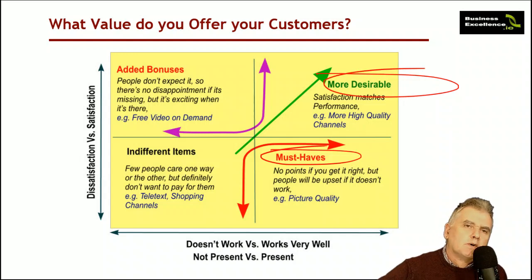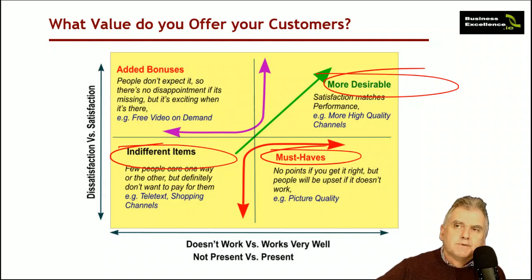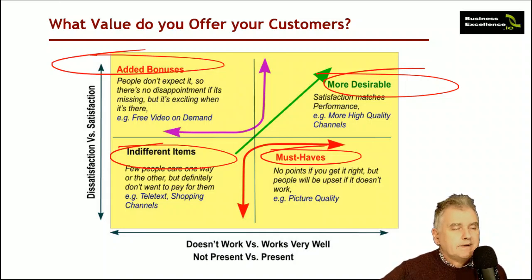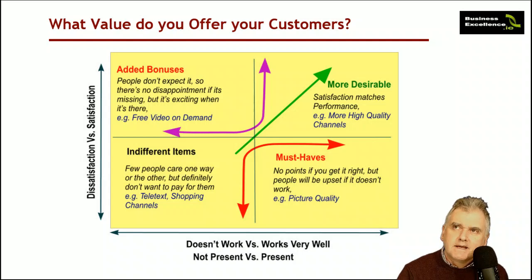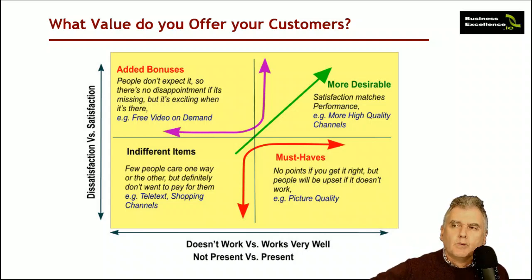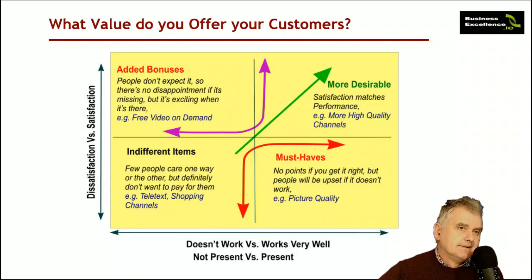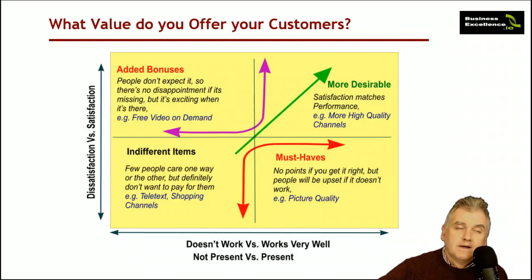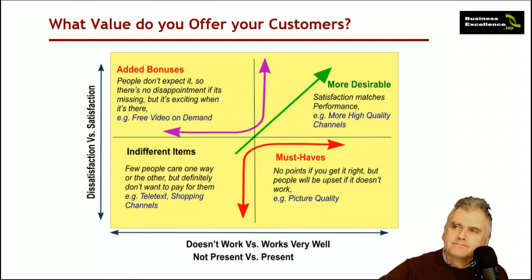There are things people are willing to pay more for — understand what those are. There are things people are not willing to pay for — ideally don't offer those. And there are bonuses you offer to retain loyalty or attract new customers, knowing that expectations will change. If you're buying a phone today with a 20-megapixel camera, in a year or two you'll probably be looking for 24 or 28 megapixels as your starting threshold.